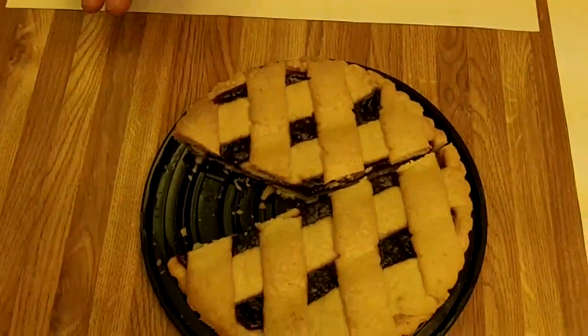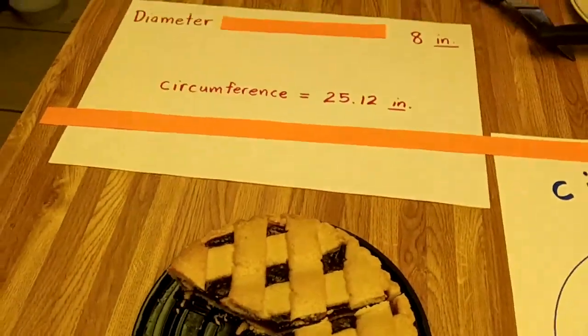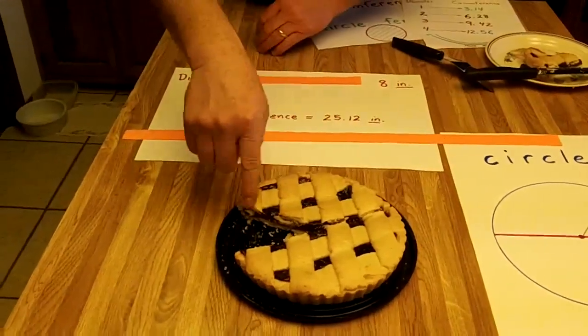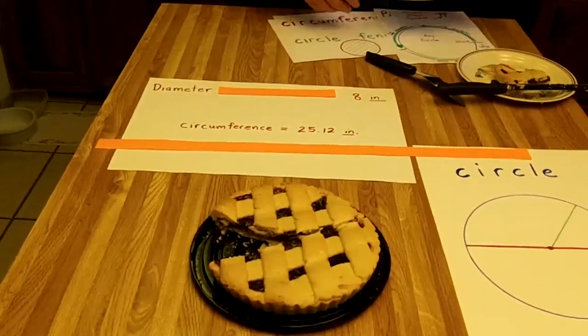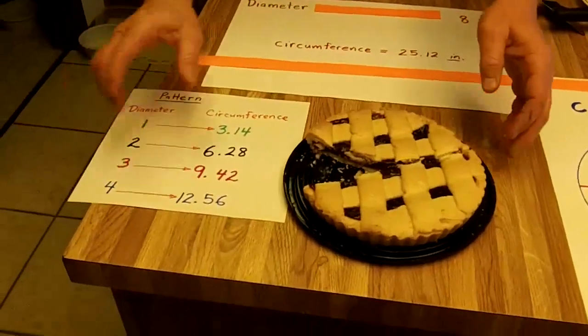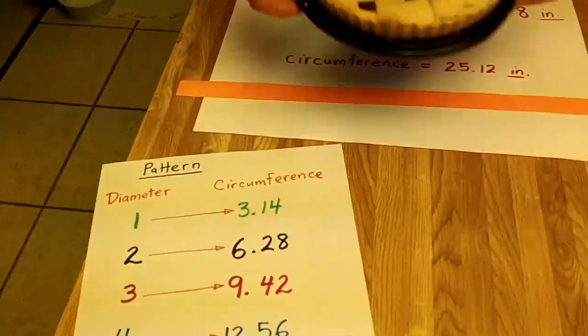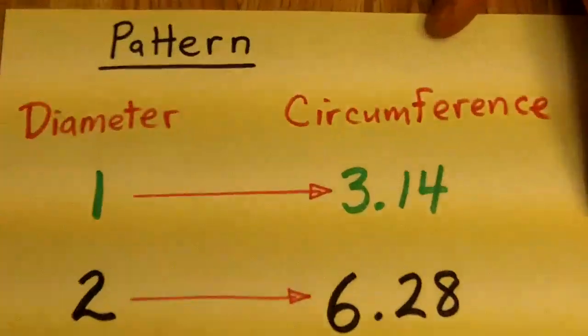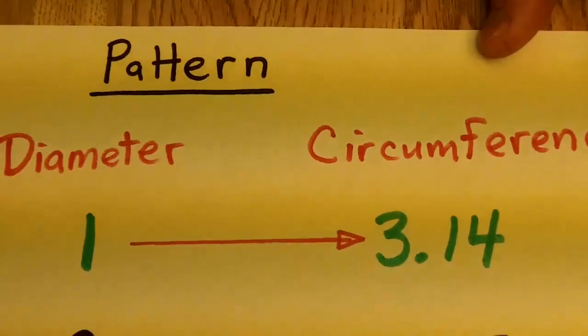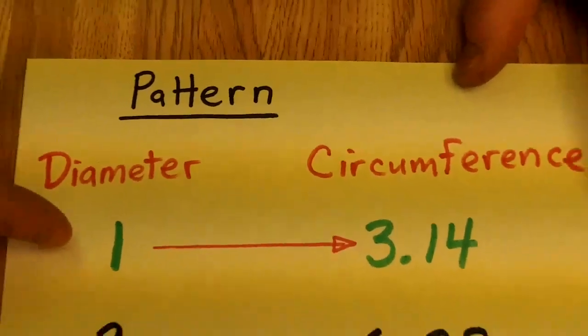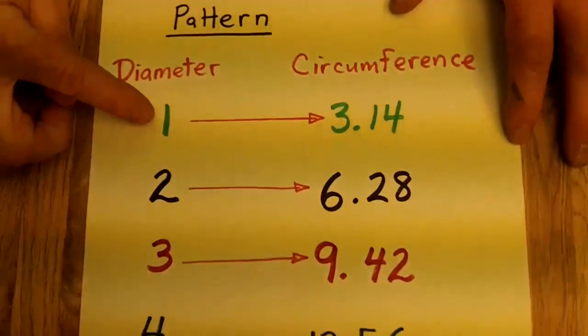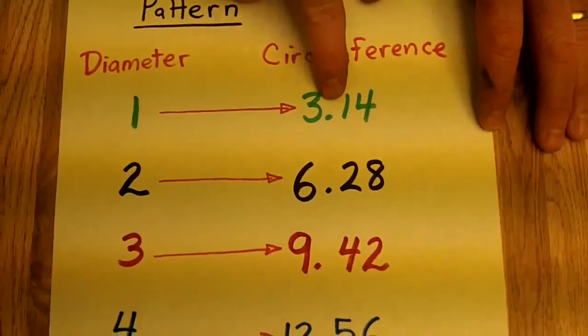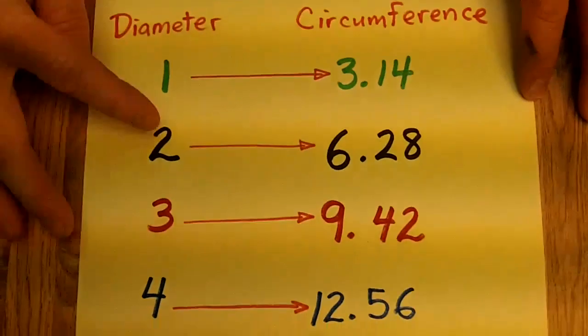Now, that proportion that every single circle has, that the circumference is a little more than three times the diameter, that portion is what the ancient Greeks called Pi. So, if we look at a pattern that some of the Greeks saw, if a certain circle had a unit measurement of one, they noticed that the circumference averaged out to 3.14.